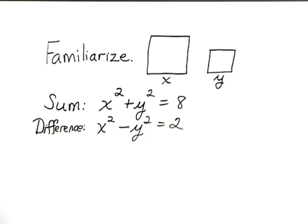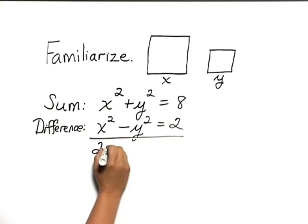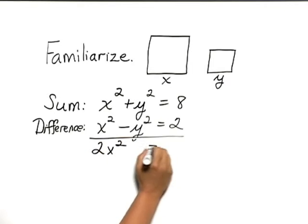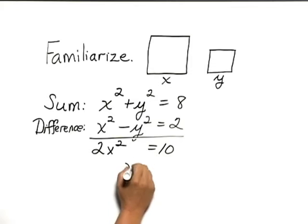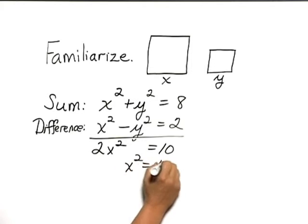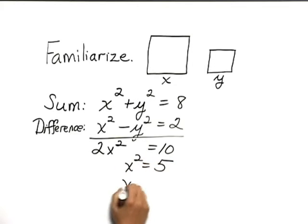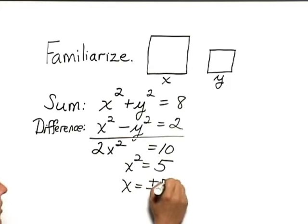Now, we can see we have a system of equations that we can, if we add, eliminate the y squared. This would give us 2x squared equals 10, or x squared equals 5, or x equals plus or minus the square root of 5.